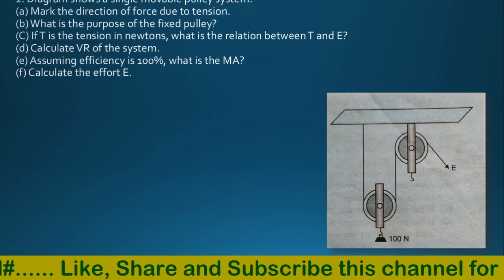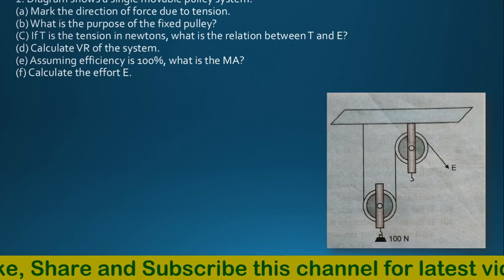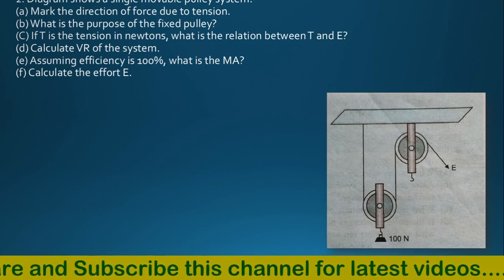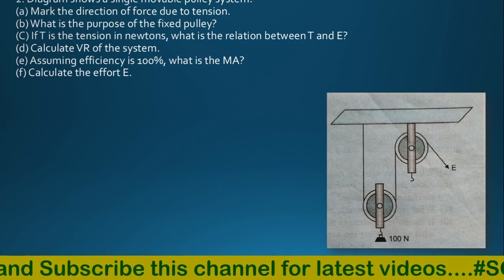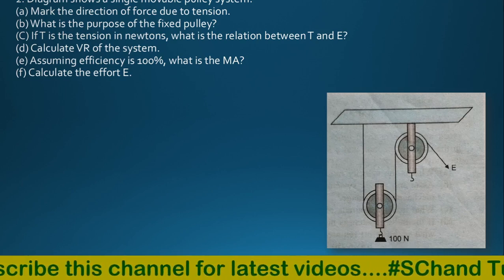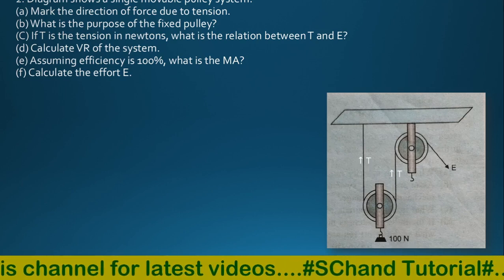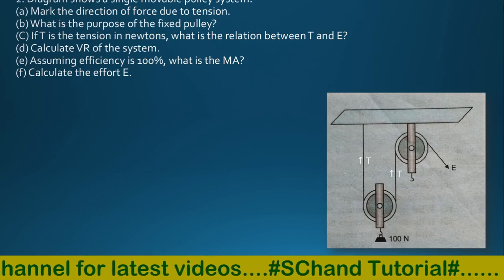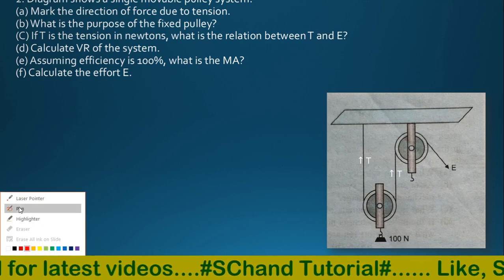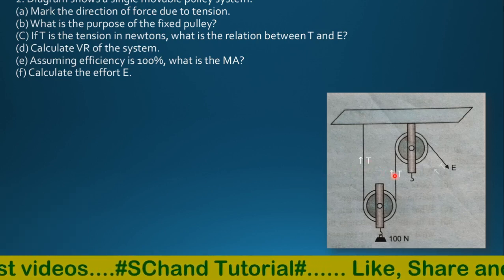The diagram shows a single fixed pulley system. Mark the reaction of the force due to tension. What is the purpose of the fixed pulley? And if t is the tension in the string in Newton, what is the relation between t and e? So for part a, here are the tensions marked — first tension, second, and third.